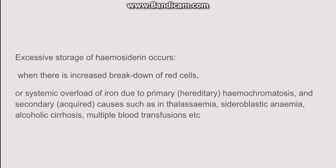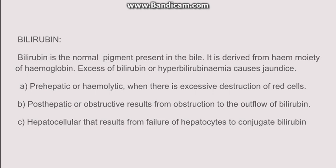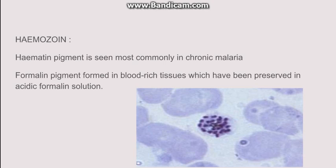Going to bilirubin — it is a normal pigment present in the bile, formed from the heme moiety of hemoglobin. Excess bilirubin is known as jaundice. The main causes can be pre-hepatic due to hemolytic anemias, hepatic due to any defect in hepatocytes to conjugate bilirubin, or post-hepatic (obstructive), in which there is obstruction to the outflow of bilirubin.